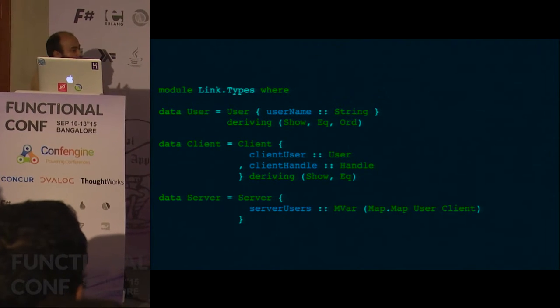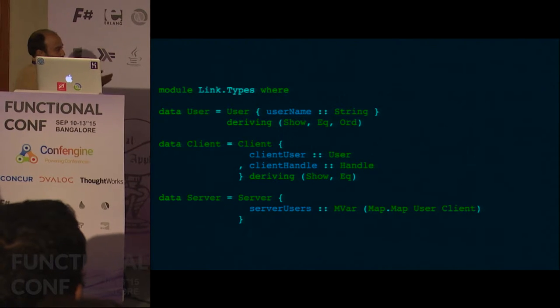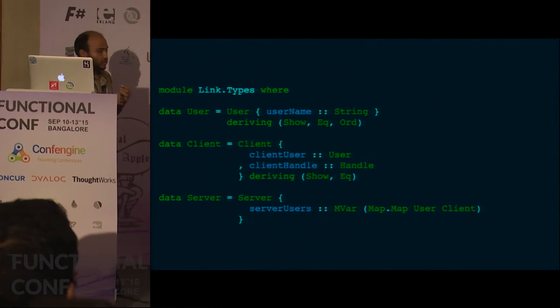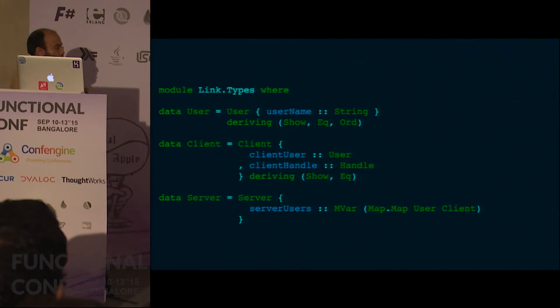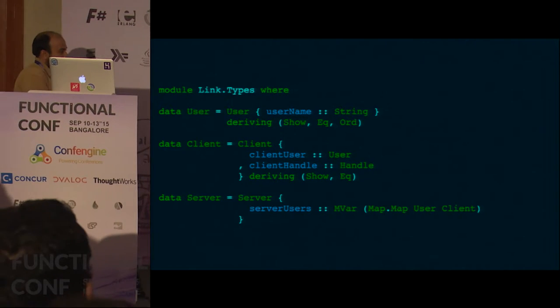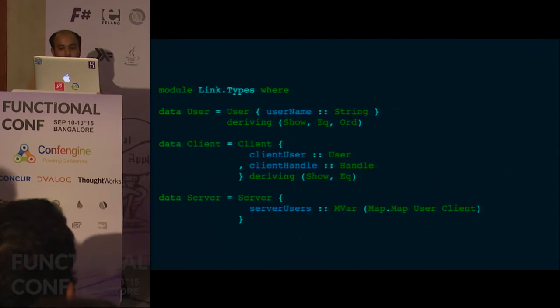Every time you add a new user, you add that user to the client map. And when the user goes away or quits, you remove the user from the map. What's interesting here is the MVar.